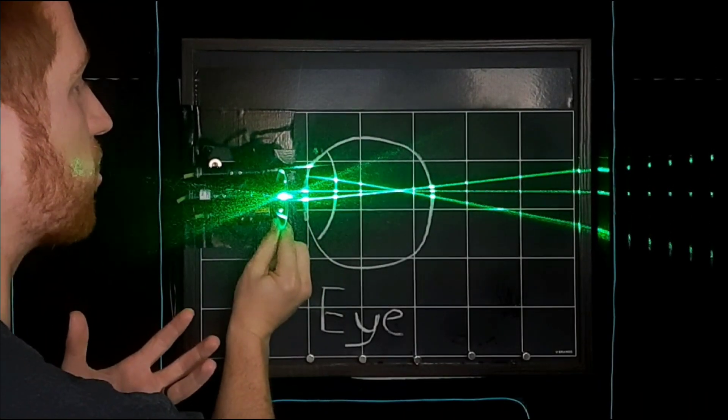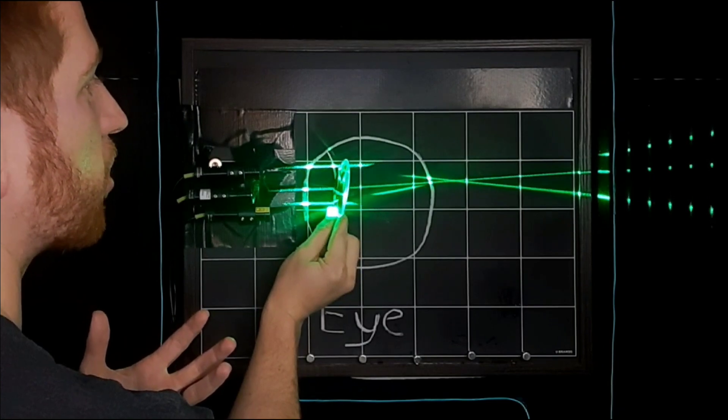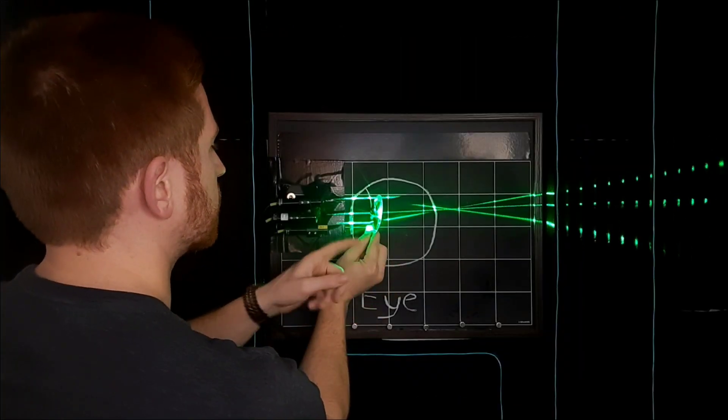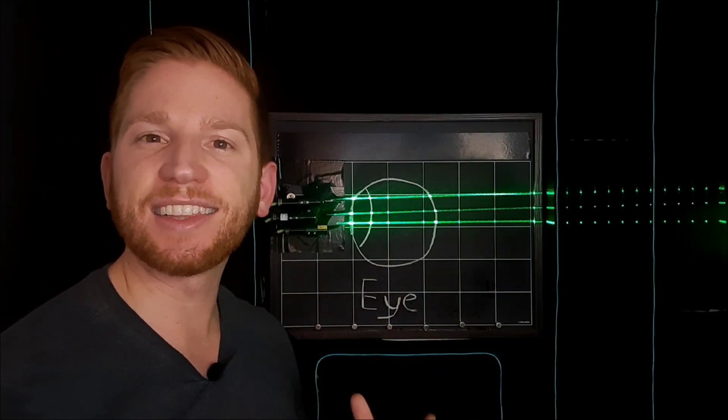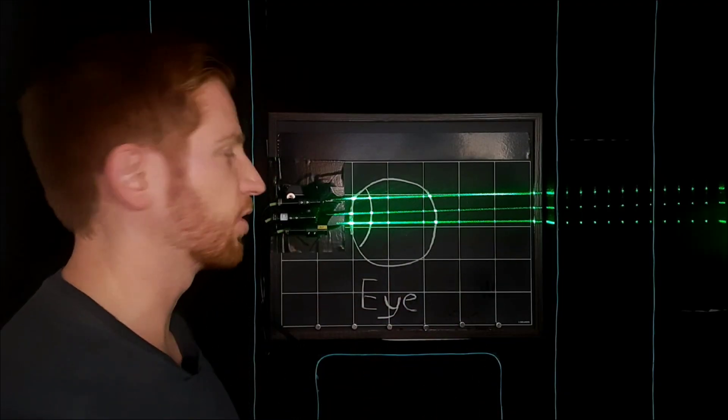However, if you wear glasses or contacts, you're probably nearsighted or farsighted. In both cases, the cornea on the front of your eye and the lens inside of that aren't focusing light properly. It's not going right onto the retina.